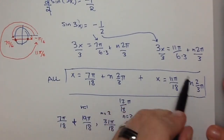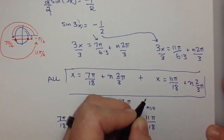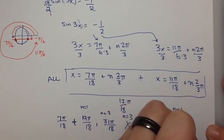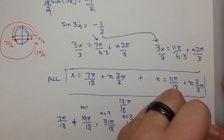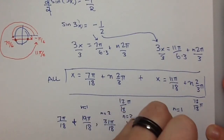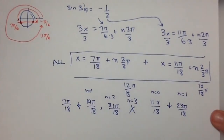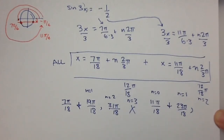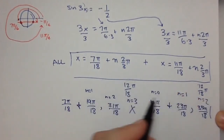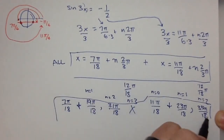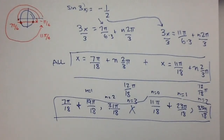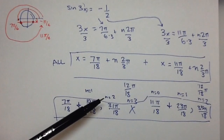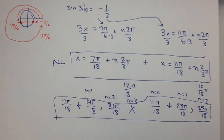We also have to look at the second solution. This gives us 11π over 18 when n equals 0. When n equals 1, remember 2/3 π is 12/18 π, so 12 plus 11 gives us 23π over 18. When n equals 2, that gives us 35π over 18. So all the solutions on the domain are: 7π over 18, 19π over 18, 31π over 18 from the first solution, and 11π over 18, 23π over 18, and 35π over 18 from the second solution. So this is number 1A.